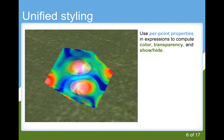Most styling in Cesium is done on the graphics card, making it extremely fast. Updates to data can be done really fast on the client side.